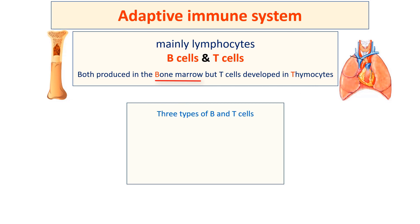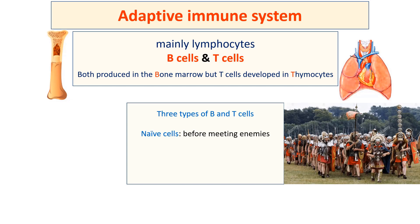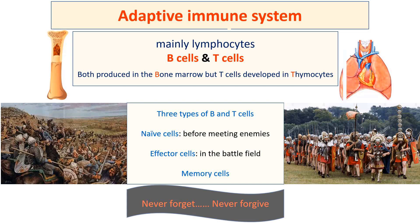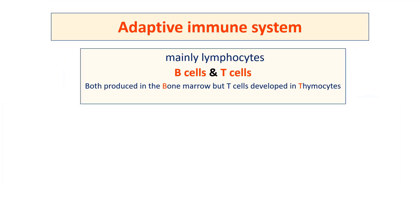There are three types of B and T cells depending on their function: naive cells, which exist before meeting enemies; effector cells, which are active in the battlefield; and memory cells, which produce the long-lasting immune memory.